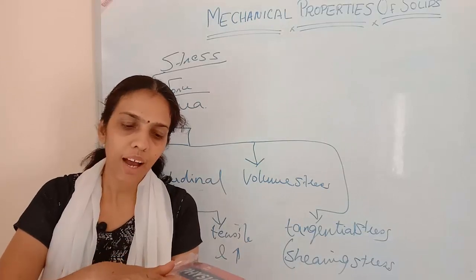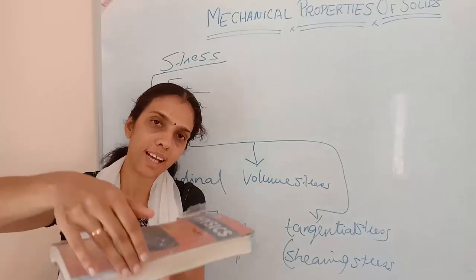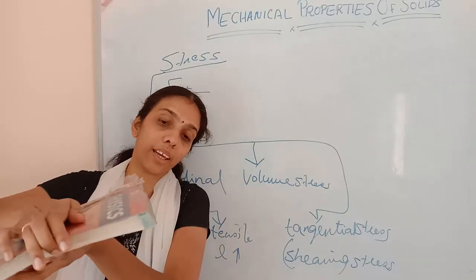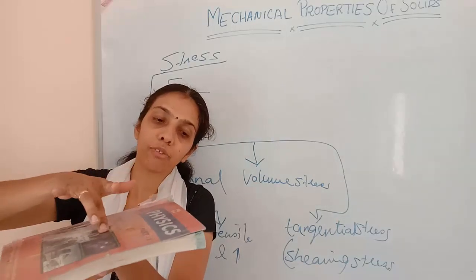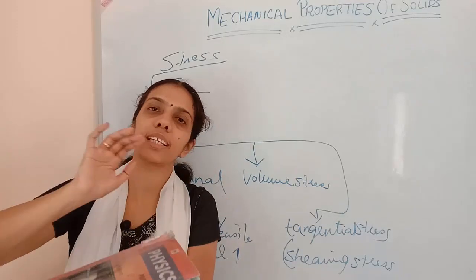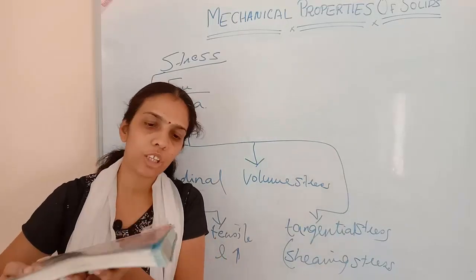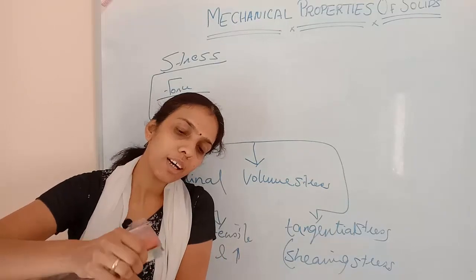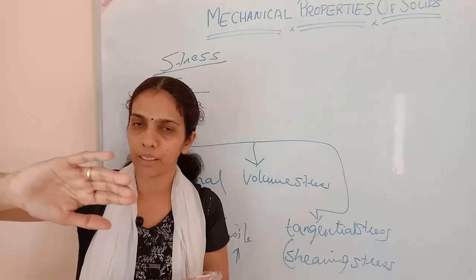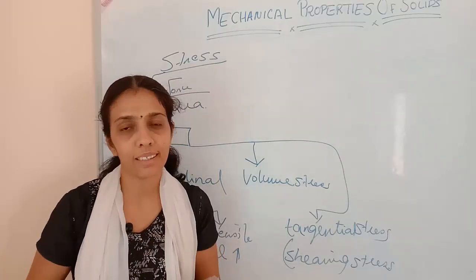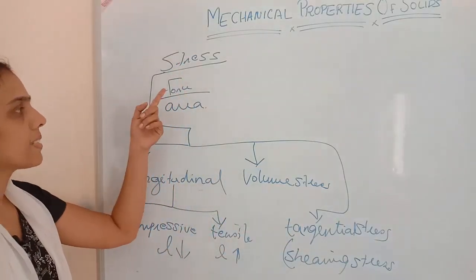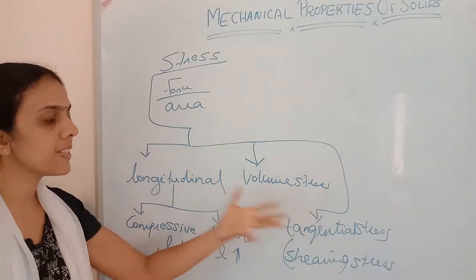Consider an object here. If I am applying a force tangentially, you can see everything is in the same position one behind the other. Now if I am applying a force in this direction, only the front portion where I am applying the force is moving towards the front — the back side is still in that position. So an angular increment is happening; the down part stays at the same position while only the front part is increasing. We are applying force tangential to that object — that is called tangential stress.